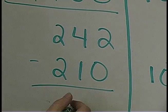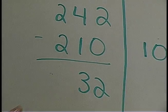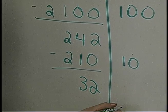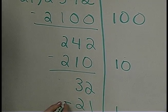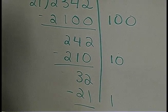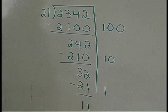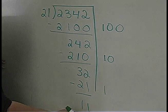Then they'll subtract again and are left with 32. They'll say, 'I know that one twenty-one is 21.' They'll subtract again, get 11, and say, 'Okay, 21 doesn't go into 11.'